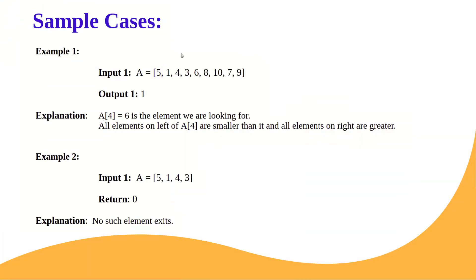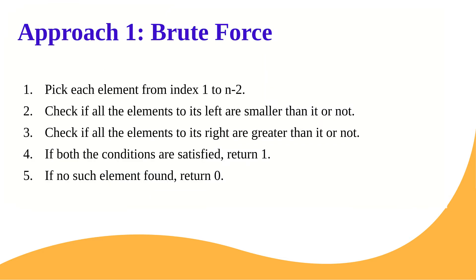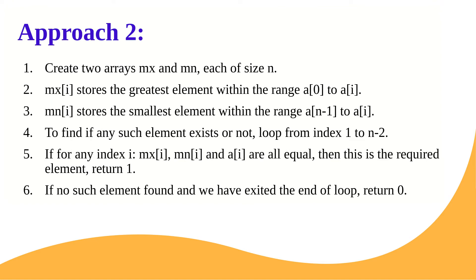Walking through the brute force on the example: check index 1 (value 1) — left has 5, not smaller, skip. Check index 2 (value 4) — left has 5, greater, skip. Check index 3 (value 3) — left has 4, greater, skip. Check index 4 (value 6) — all elements to the left are smaller, so it is a candidate. Check right — all elements are greater. Both conditions satisfied; 6 is the answer. This is O(n²).